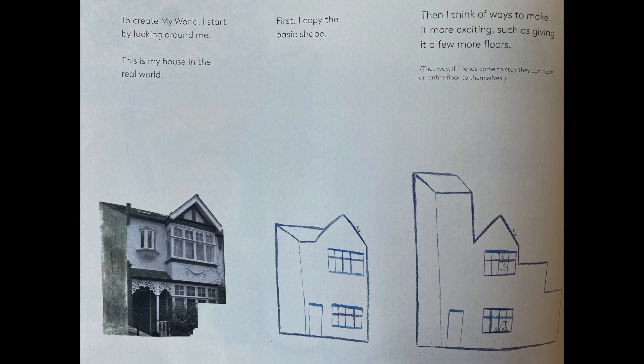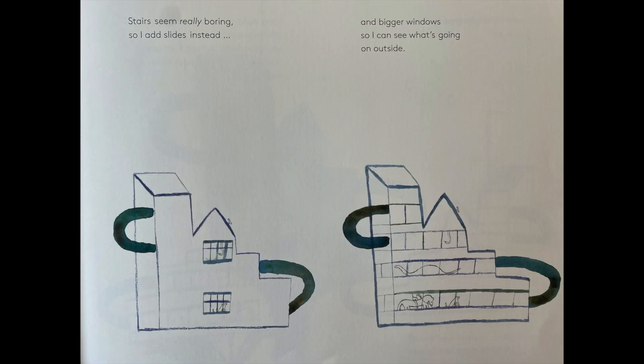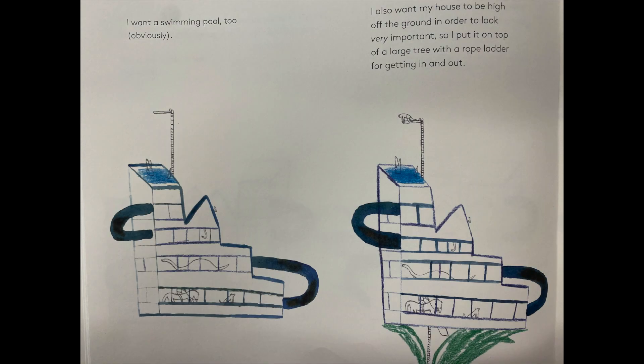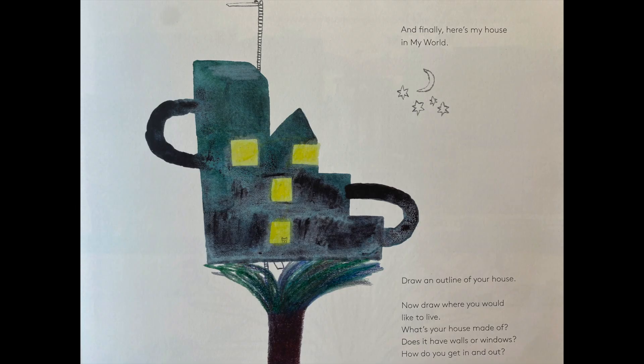To create my world, I start by looking around me. This is my house in the real world. First, I copy the basic shape. Then I think of ways to make it more exciting, such as giving it a few more floors. That way, if friends come over to stay, they can have an entire floor to themselves. Stairs seem really boring, so I add slides instead. And bigger windows, so I can see what's going on outside. I want a swimming pool too, obviously. I also want my house to be high off the ground in order to look very important, so I put it on top of a large tree with a rope ladder for getting in and out. And finally, here's my house in my world. Draw an outline of your house. Now draw where you would like to live. What's your house made of? Does it have walls or windows? How do you get in and out?